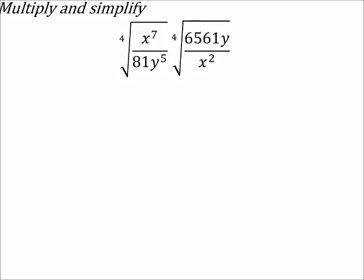Alright, let's go and multiply these two. Both of these are to the fourth root. The index has to be the same for us to multiply two quantities like this. Right here I've got an index of 4 and here an index of 4, which allows us to multiply these.